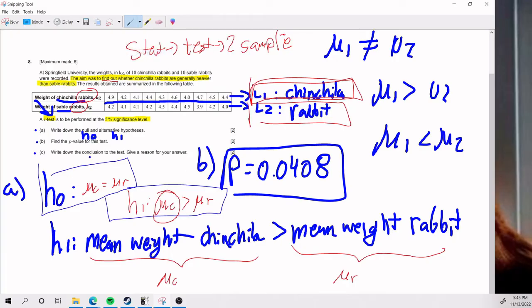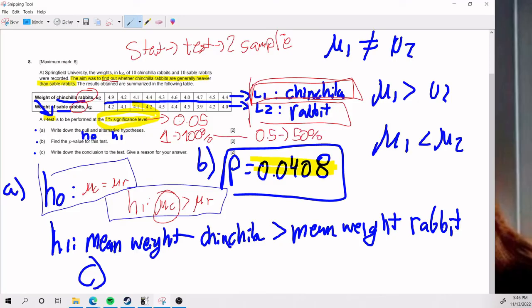Now for part C, they ask us to write down the conclusion to the test and give a reason for the answer. This, unfortunately, is one of those things that you just kind of have to memorize. But if you do it enough times, it'll enter your brain. So that is a good sign here. What we need to compare when we reach the state of concluding a test is the p-value and the significance level. So my p-value, we got it for part B, it's here. 0.0408. And the significance level is 5%. So what is 5% in decimal? 0.05. Remember that 1 is 100%. If you remember that 1 is 100% and that 0.5 is 50%, you should be able to figure out the rest very intuitively. 0.05 is 5%.